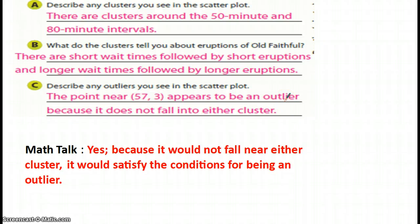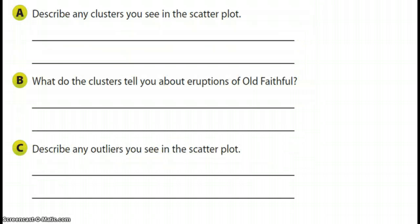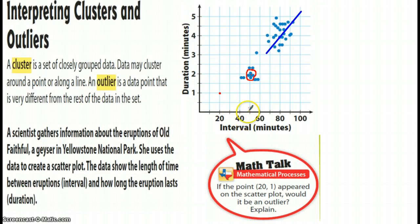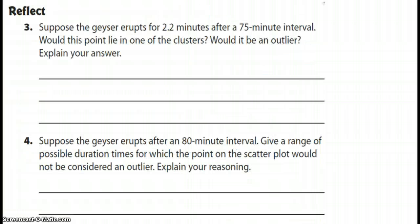Well, A says describe any clusters that you see. There are clusters around the 50-minute and the 80-minute intervals. So let's go back and make sure we see exactly what they're talking about. It's right here. You notice where our circle is? There is your set of clusters, and remember that that's a cluster around a point. Look at the way that's set up. So that would be a cluster, and then also at 80 minutes up here, this would be a cluster. But this cluster is more so a cluster about a line, or should I say a longer line. Does that make sense to you?